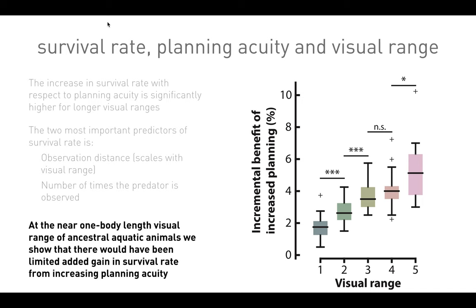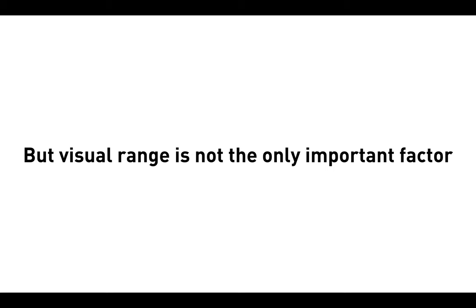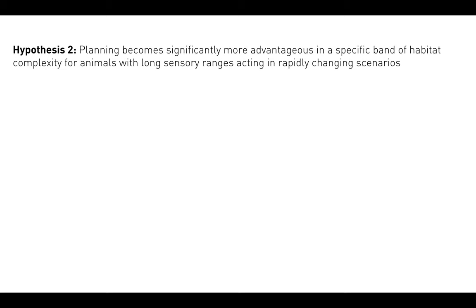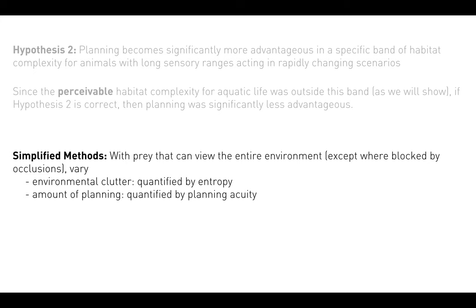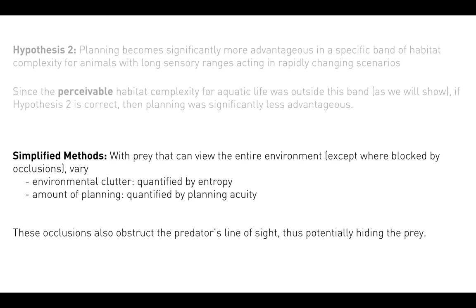Visual range is not the only important factor. Think of the leopard hunting the impala — there's clearly a role for spatial complexity. The second hypothesis: planning becomes significantly more advantageous in a specific band of habitat complexity for animals with long sensory ranges acting in rapidly changing scenarios. Since the perceivable habitat complexity for aquatic life was outside of this band, if hypothesis two is correct, then planning was significantly less advantageous in the aquatic regime. Here, the prey can view the entire environment, except blocked by occlusions. We vary environmental clutter quantified by entropy, and we vary planning acuity.